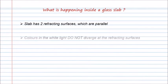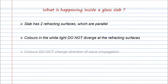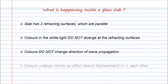What is happening inside a glass slab? A slab has two refracting surfaces which are parallel. Colors in the white light do not diverge at the refracting surfaces and do not change direction of wave propagation. Colors undergo merely an offset or lateral displacement with respect to each other.